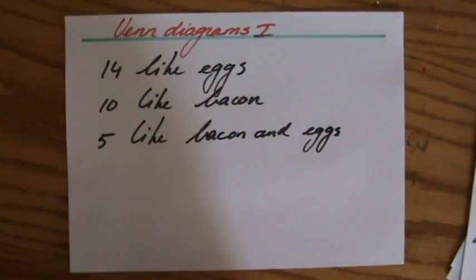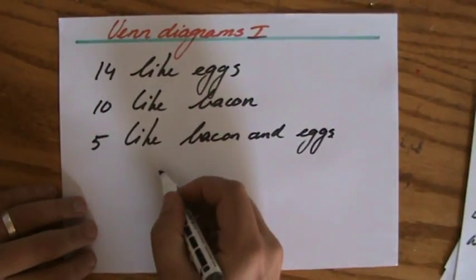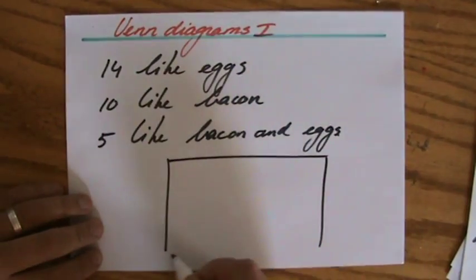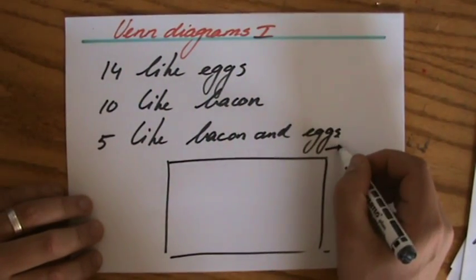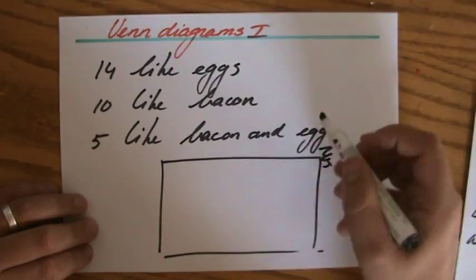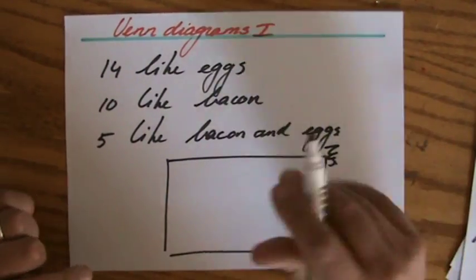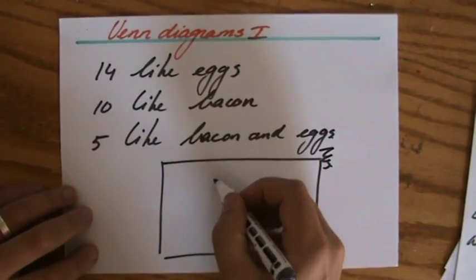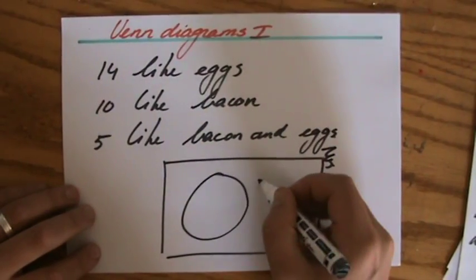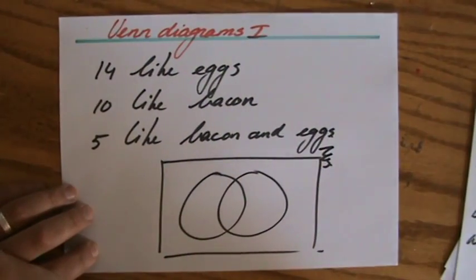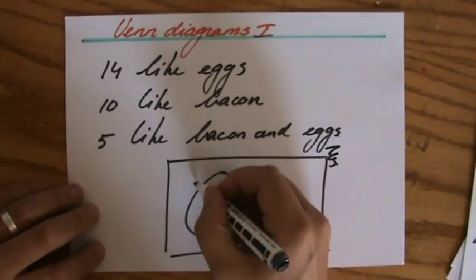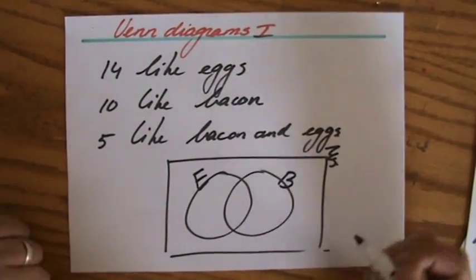And you can represent that in a Venn diagram. I have the big rectangle which we call the universal set and we have this special looking sign for it but you can forget about that. And then we have two of these circles, and let's call this one the eggs and that circle the bacon.